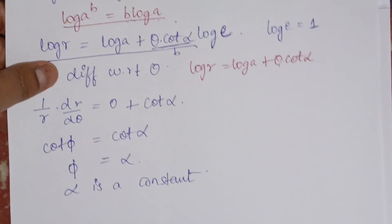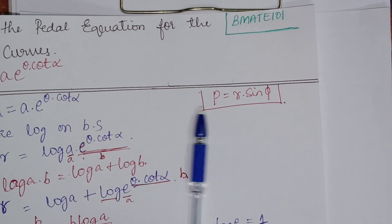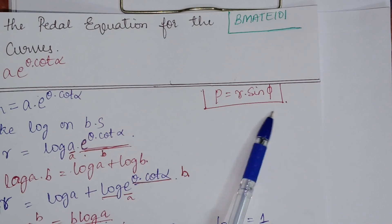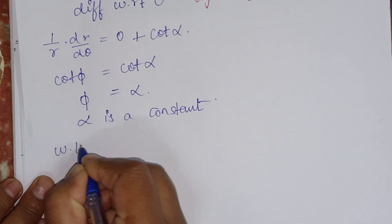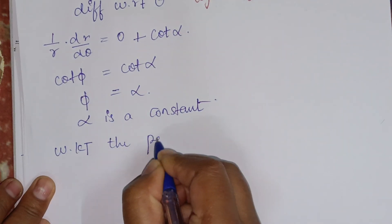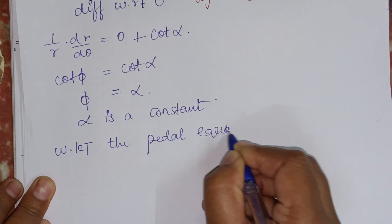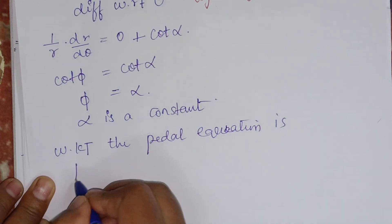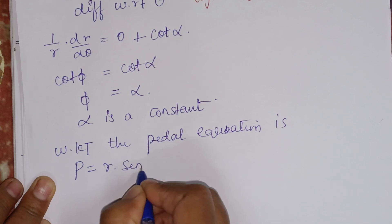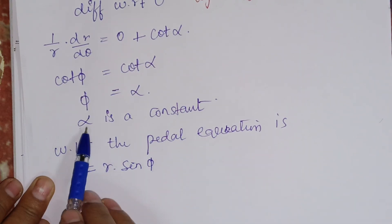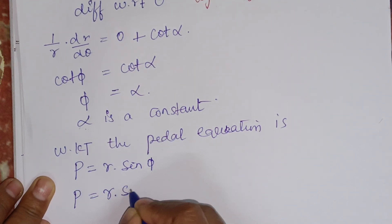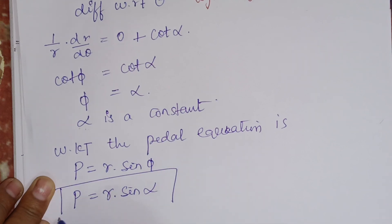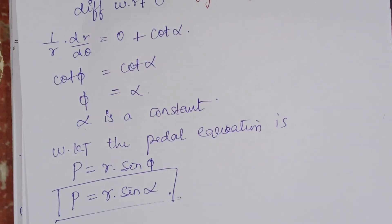From this equation, we know that phi is nothing but alpha, and alpha is a constant. Recalling the pedal equation: P equals R into sine phi. Since phi equals alpha, the pedal equation can be written as P equals R into sine alpha. Hence, done. If you like the explanation, do not forget to share it with your friends.